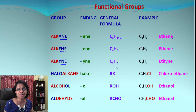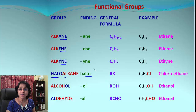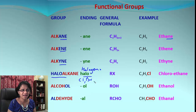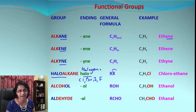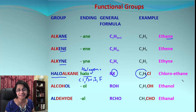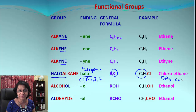Alkynes have at least one triple bond with formula CₙH₂ₙ₋₂ — an example is ethyne. The next one is haloalkane; the word 'halo' comes from halogens: chlorine, bromine, iodide, or fluorine. The general formula is RX, where X stands for the halogen group. For example, C₂H₅Cl — C₂H₅ is the ethyl group — so we can say chloroethane, or also written as ethyl chloride.